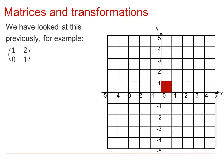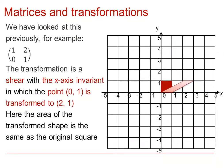Previously we have looked at the matrix 1, 0, 2, 1, and we are now going to apply it to the unit square object. This transformation is a shear with the x-axis invariant, and the point (0, 1) has been transformed to the point (2, 1). We can see here that the area of the shape is the same as the original object.